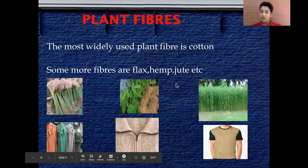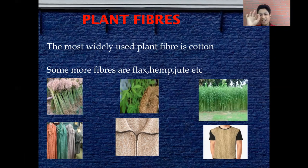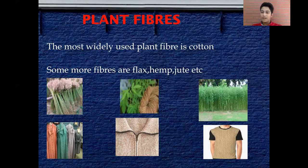The building block in the plant world is cellulose. Just like the building block of our body is a cell, and the building block of a house is bricks, the building block of plant fibers is cellulose. All plant fibers are majorly made up of cellulose.